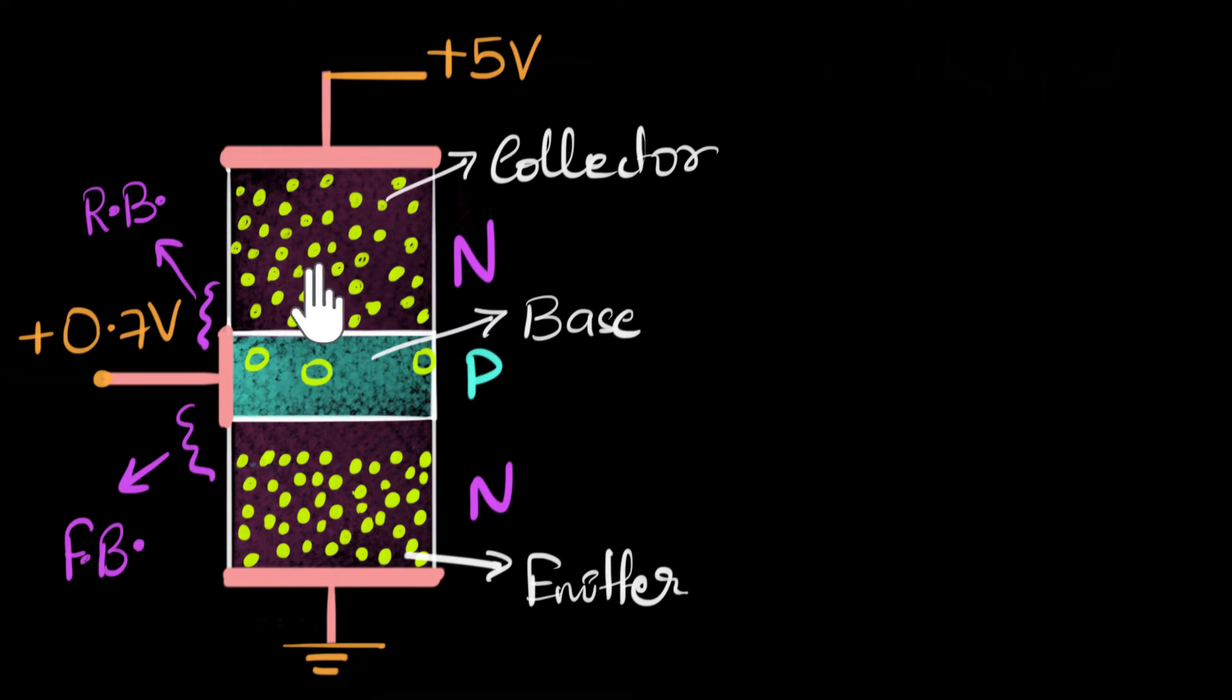All right, now we may have one question in your head. Isn't the collector and the emitter identical? If you were to flip the transistor upside down, it won't look any different. So what's the difference between them? Well, from the operation point of view, there's no difference. However, if you look from the design point of view, there are certain differences.